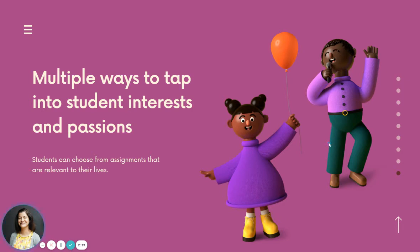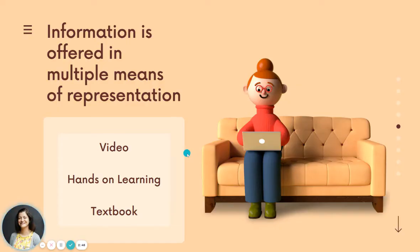The principles of universal design help us address those three keys of variability. The first is that we want to provide multiple ways to tap into students' interests and passions, giving them choice and making learning relevant to their lives. The second is that we offer information in multiple means — we don't just use a textbook, we may partner a textbook with a video or a hands-on learning activity.